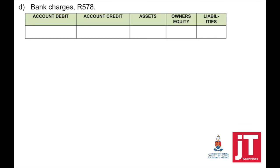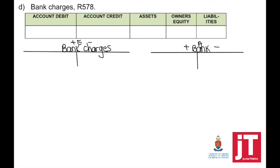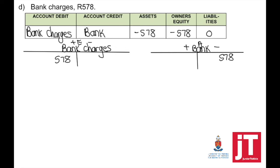Adjustment D — bank charges, 578. A payment was made, which means that bank is going to be credited, account debited is bank charges. This means that bank charges have a negative effect on the owner's equity.